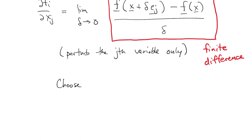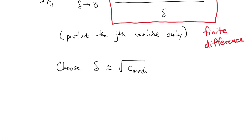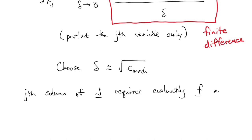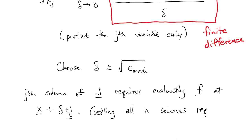For reasons we'll get into in the next chapter, you want to choose delta to be roughly on the order of the square root of machine epsilon. To get the jth column of the Jacobian, we have to evaluate f at this additional perturbed point. So to get all n columns, we need n evaluations of f.